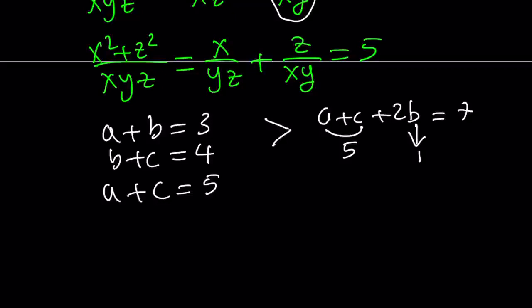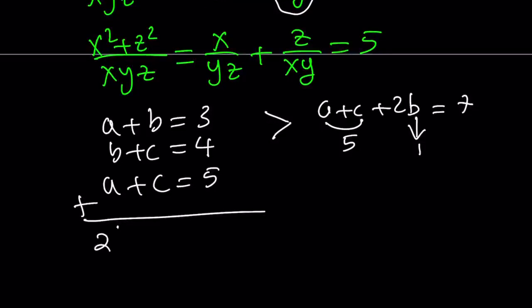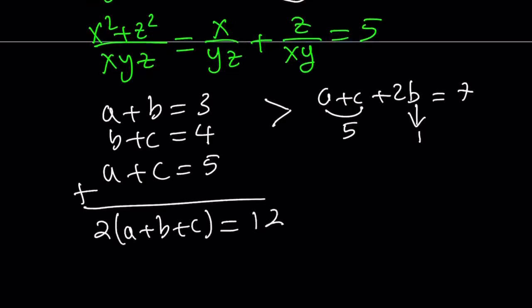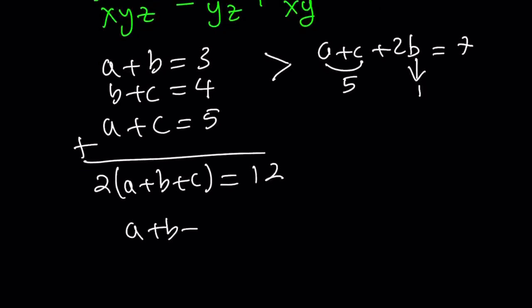But I'm going to use a different approach, which is kind of like my second method for this part. You can just add all the equations. That's going to give you 2 times the quantity A plus B plus C equals 12. From here, we get A plus B plus C is equal to 6.